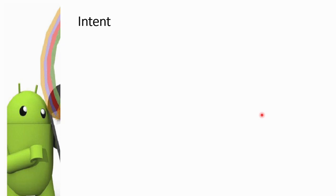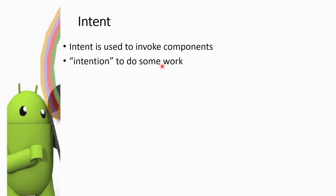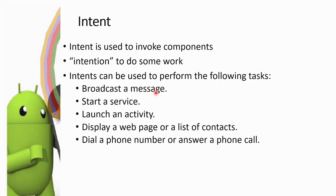Next is intent. Intent means an intention to do something. In Android, if you want to go to any particular function or activity — like making a phone call or sending an SMS — those are actions performed via intents. Intent is used to invoke components. Intents can be used to perform tasks such as broadcasting a message, starting a service, launching an activity, displaying a web page or list of contacts, or dialing a phone number.